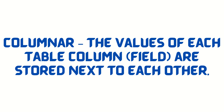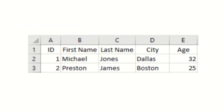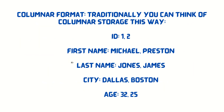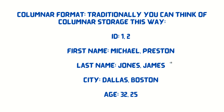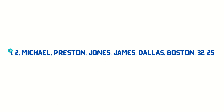In columnar format, the values of each table column are stored next to each other. Taking the same example, we store it like: IDs together — 1, 2 — then first names Michael, Preston; last names Jones, James; cities Dallas, Boston; and ages 32, 25 respectively. Visually in memory: 1, 2 together, then Michael, Preston, then Jones, James, then Dallas, Boston, and 32, 25. Choosing a format is all about ensuring it matches your downstream intended use for the data.